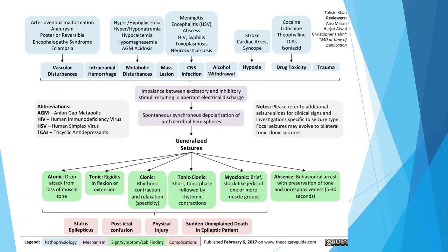Generalized seizures may be atonic, tonic, clonic, tonic-clonic, myoclonic, or absence. In all of these except absence seizure, there is post-ictal confusion. In absence seizure, there is no post-ictal confusion—this is an important distinction. These seizures can progress to status epilepticus, cause physical injury, and the patient may experience sudden death, particularly with myoclonic, tonic-clonic, clonic, tonic, or atonic types.